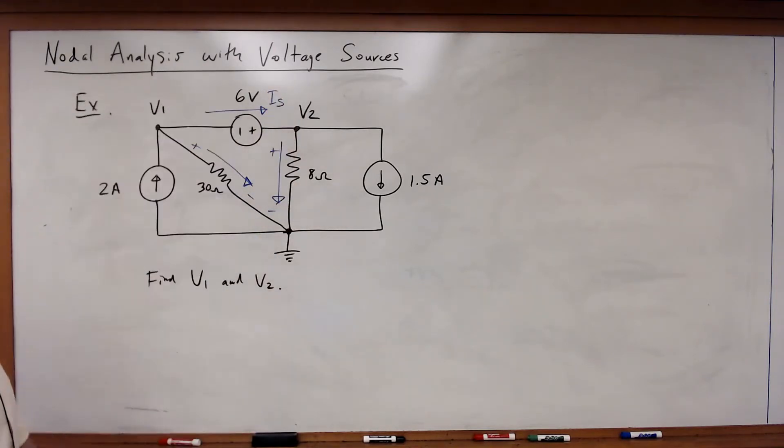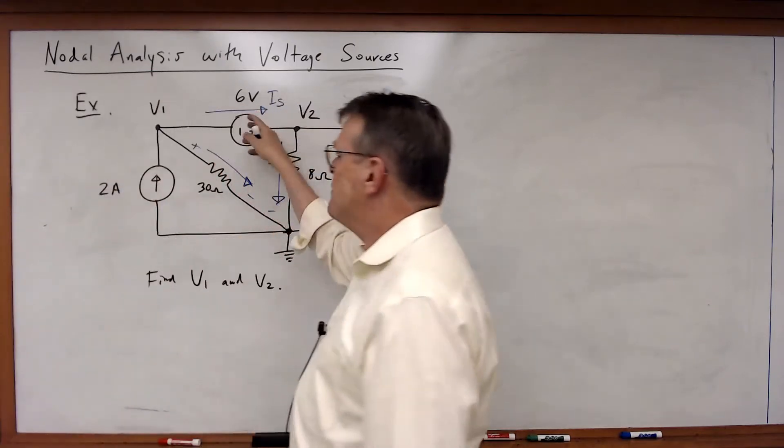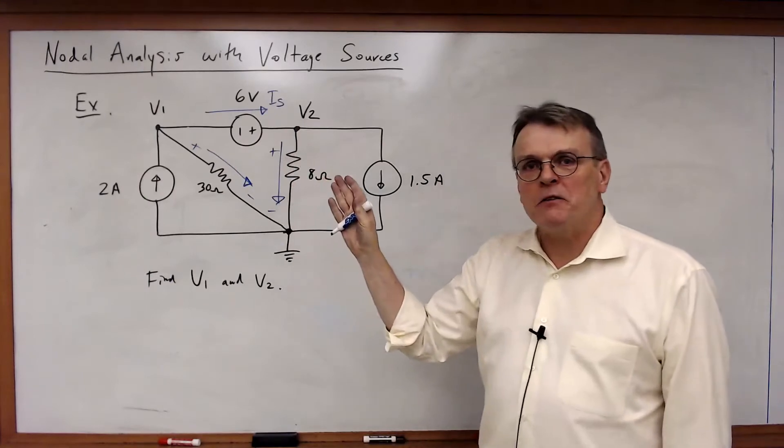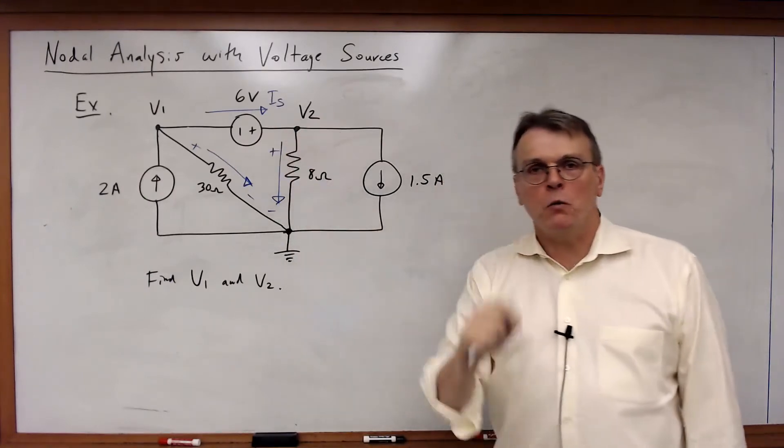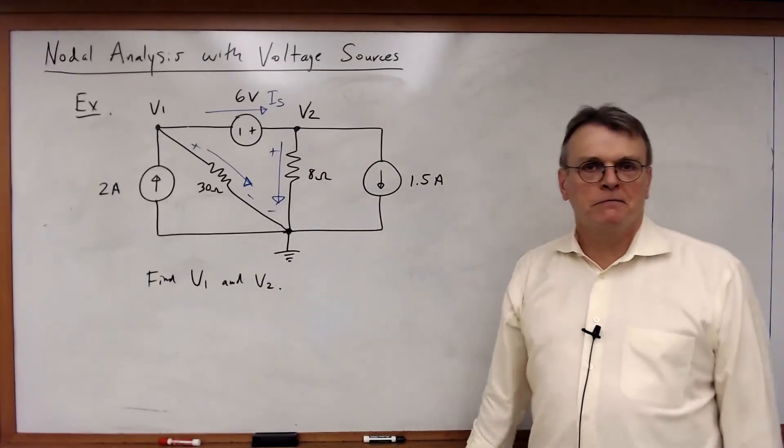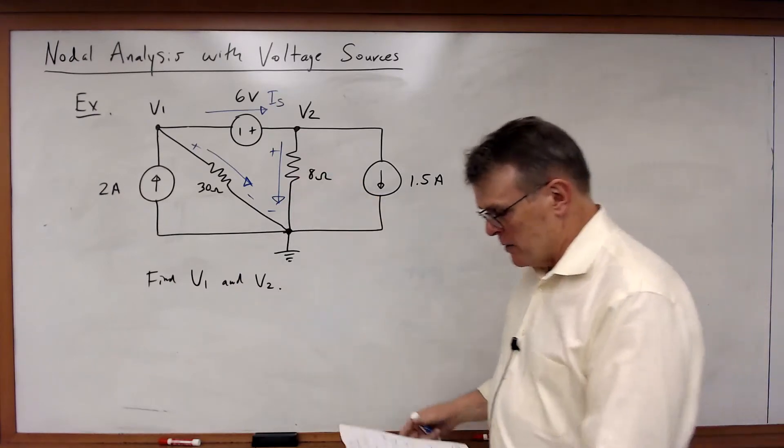But if I'm going to do that I cannot forget to also define the current variable for that voltage source. I'm going to call that I sub s. So I've got I sub s flowing through that 6 volt source. Once again you do not need to follow the passive sign convention when you're solving for a source.